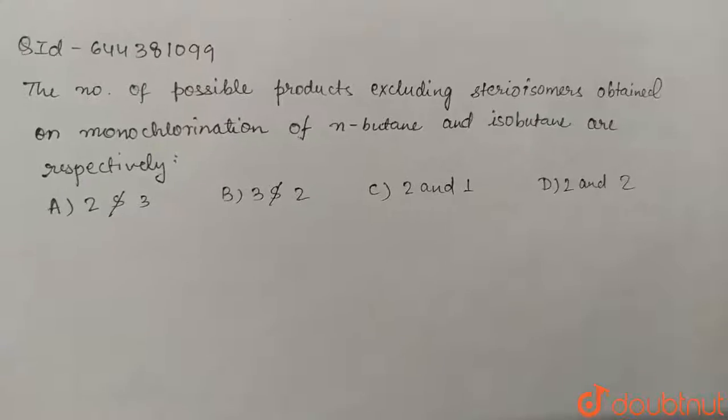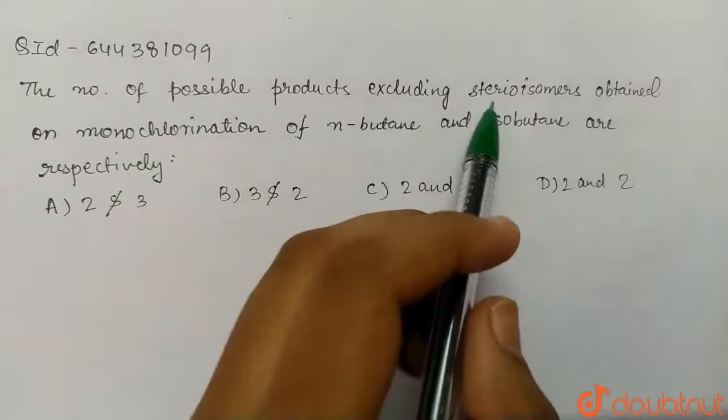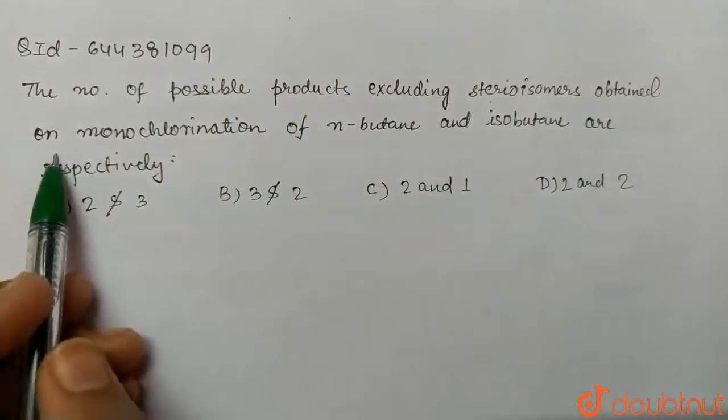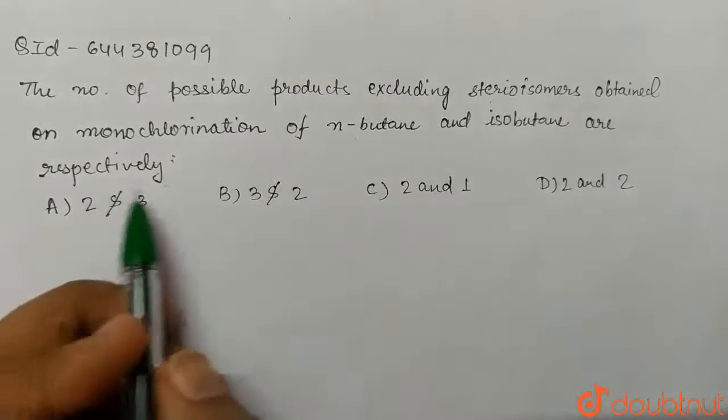Hello students, today's question is: the number of possible products excluding stereoisomers obtained on monochlorination of N-butane and isobutane are respectively.